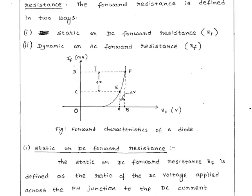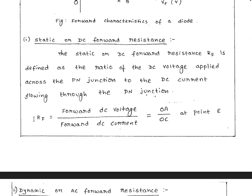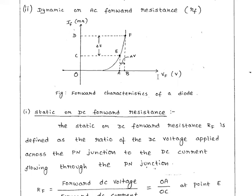Now let's do a rearrangement, because the DC forward resistance is the reciprocal of the slope of the VI characteristics. It is a reciprocal of the slope of the VI characteristics.